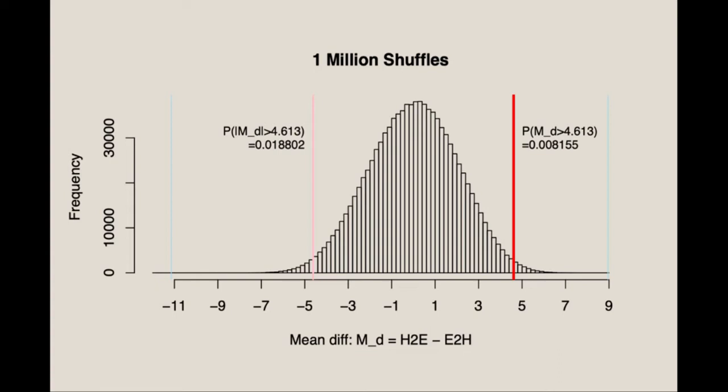Notice that this is reasonably close to the value we obtained using the t-test, 2.1%. The Azure lines at either end are the smallest and largest possible mean differences we might obtain by shuffling the data.